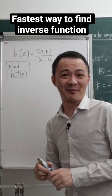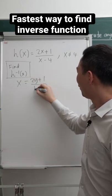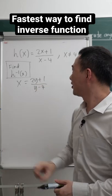So you can see this is what happened. So this x equals to 2y plus 1 over y minus 4. Do you see?